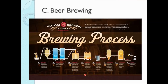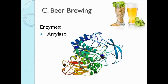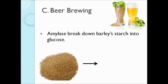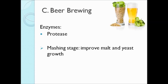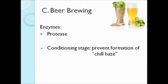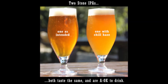Enzymes involved in beer brewing are amylase and protease. At the mashing step, amylase is added to break down barley starch into glucose. Protease is added to improve the malt and the yeast growth in the mashing step. In the conditioning stage, protease is used to prevent formation of chill haze in beer, which is a protein-polyphenolic complex.